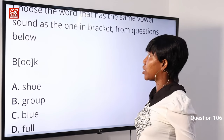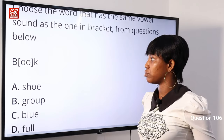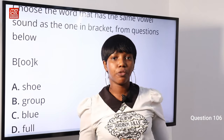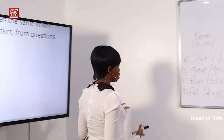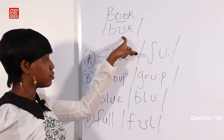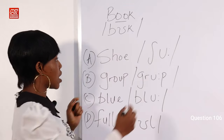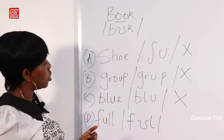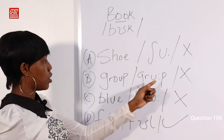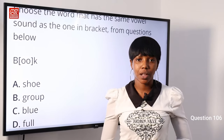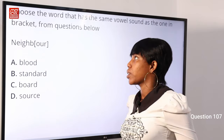Question 106: Choose the word that has the same vowel sound as the one in brackets. The word is 'book.' Options: A) shoe, B) group, C) blue, D) full. The word 'book' has a short vowel sound. Option A) shoe is a long sound, B) group is a long sound, C) blue is a long sound. Option D) full has the same short vowel sound as 'book.' Option D is the correct answer.